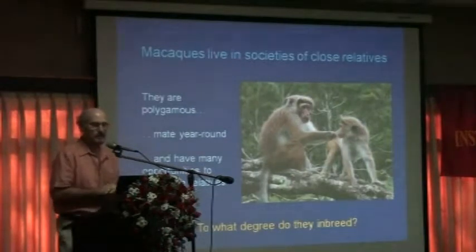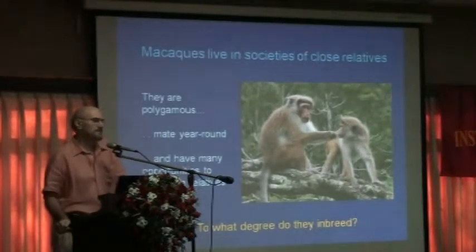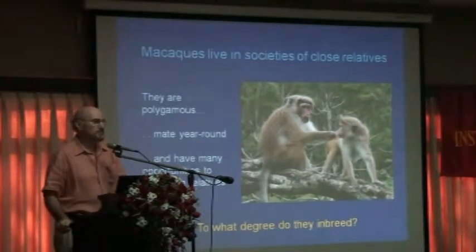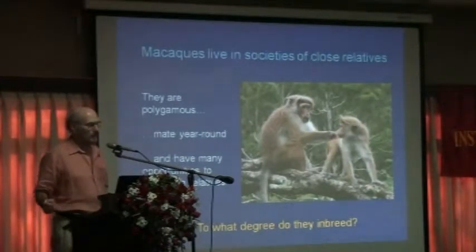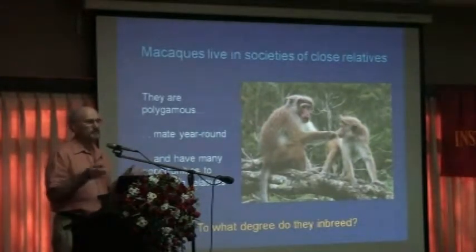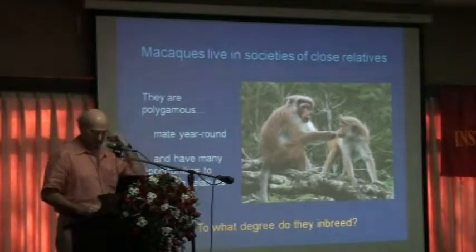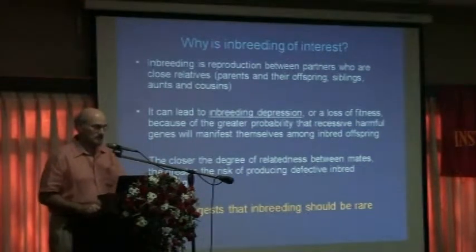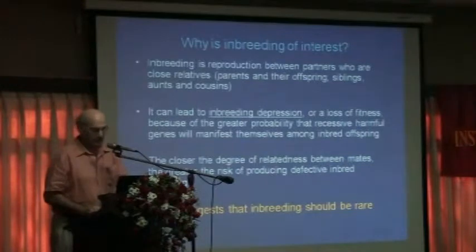The problem here is that macaques — monkeys — live in closed, polygamous societies. Polygamous means a male will mate with many females and the female will mate with many males, and they mate year-round, so they have many opportunities. Living in a closed group means monkeys live in groups of relatives, so they have many opportunities to mate with relatives. Here's a bit of a dilemma: it's an advantage to live with your family members because they help you in so many ways, but you can't mate with them because of the risk of inbreeding. So how do organisms cope with that?